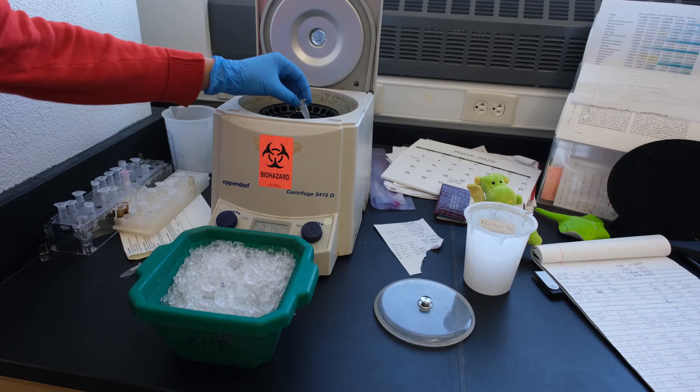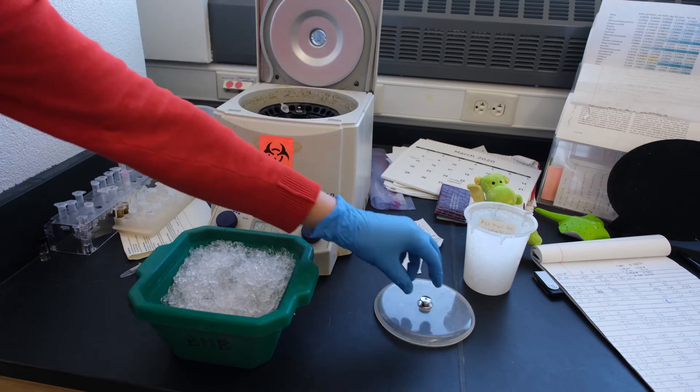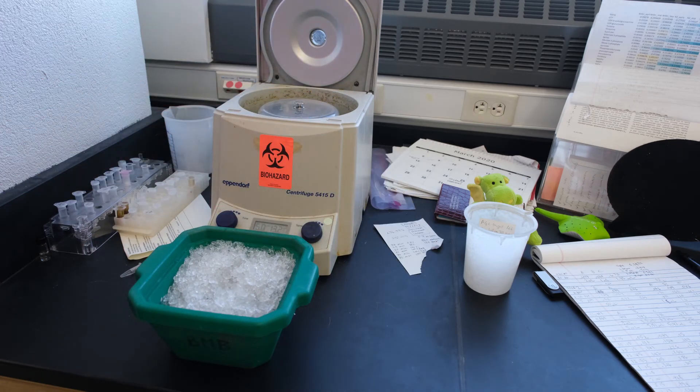Spin the samples down in a microcentrifuge to remove cellular debris. Spin for five minutes at maximum speed. Remove the tubes back to ice when your spin is finished.